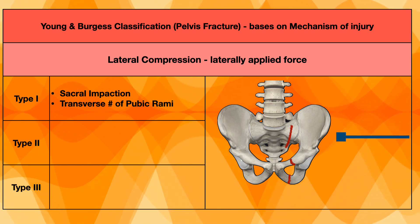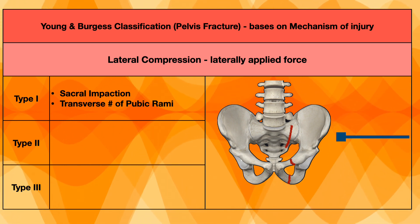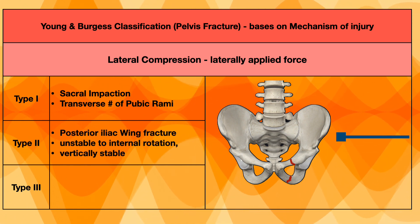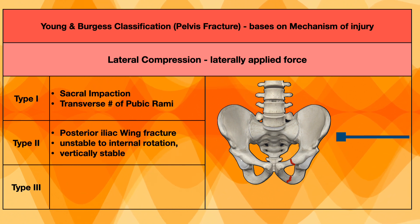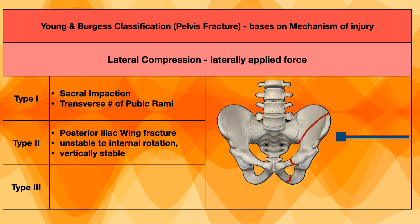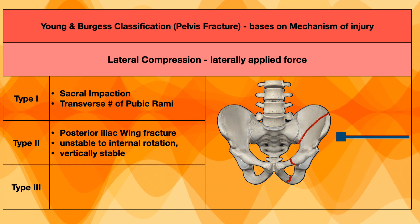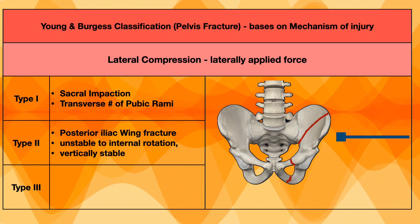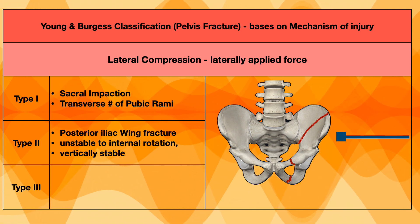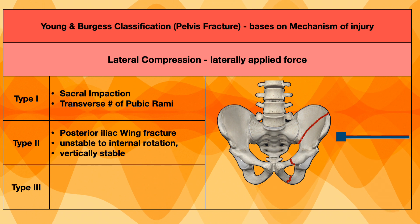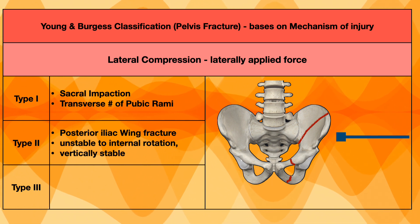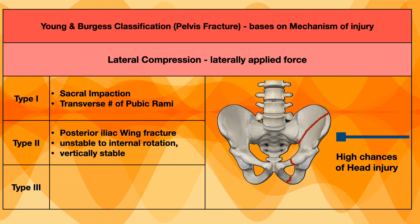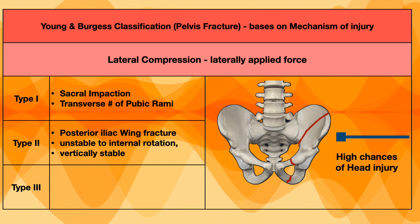Type 1 is not a very high-energy fracture, so we will not expect a very large amount of blood loss and we can manage this patient conservatively. The next type is type 2, in which there will be a posterior iliac fracture — usually a crescent-type fracture. If a patient gets this fracture, the pelvis will become unstable with internal rotation, but vertically it will be stable. In type 2, there are high chances of head injury, so we should evaluate the patient thoroughly.